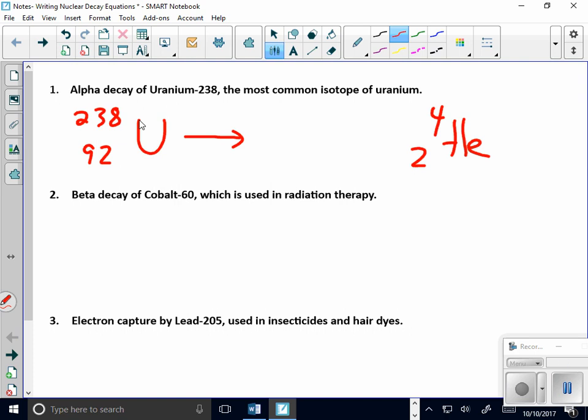So just simply by doing my math here, the number that I'm going to get is 238 minus 4 is going to be 234. 92 minus 2 is 90. And we said before that that is thorium.